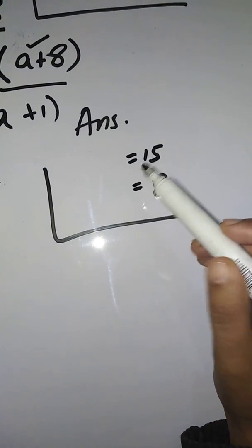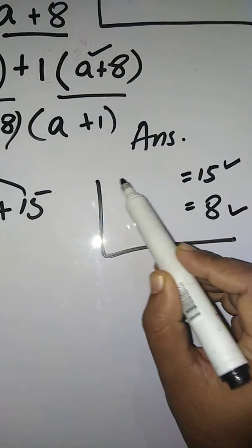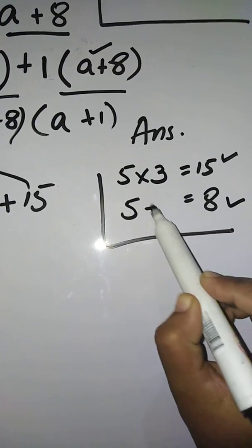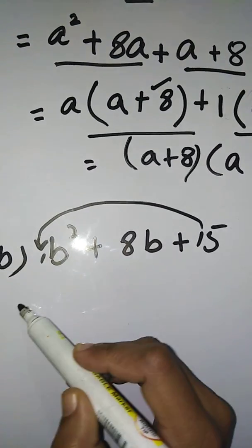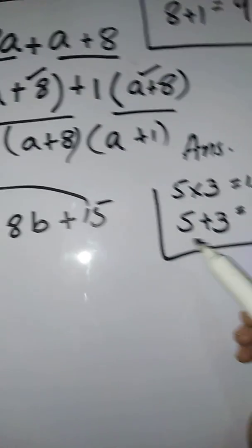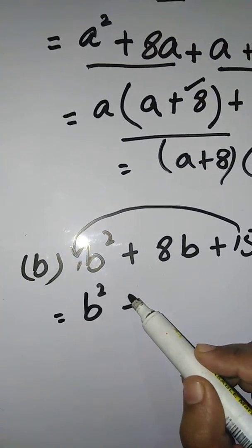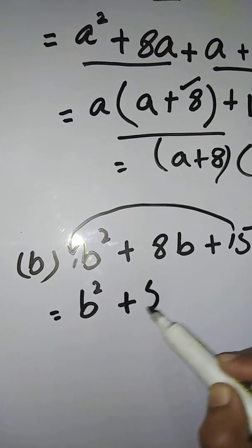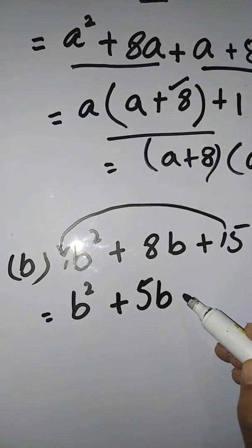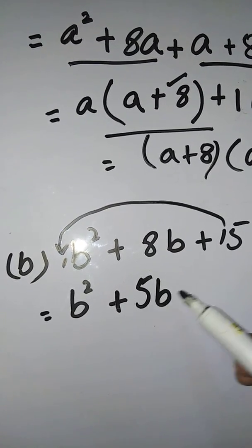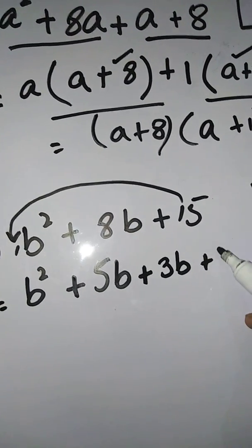Find two factors that when multiplied give 15 and when added give 8. Try 5 × 3 = 15 and 5 + 3 = 8. So the factors are 5 and 3. Write the first and last terms as they are. In place of the middle term, write the two factors. The sign is plus, so write +5b + 3b, then +15.